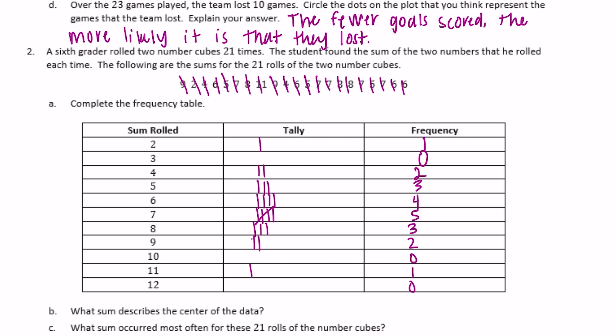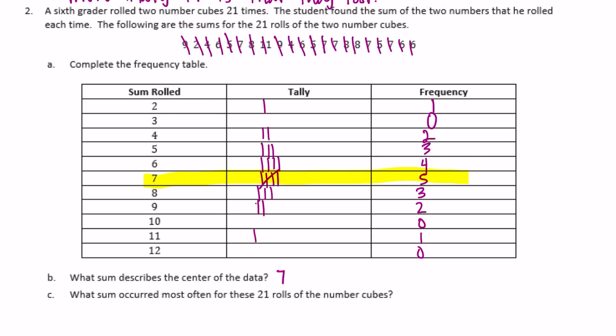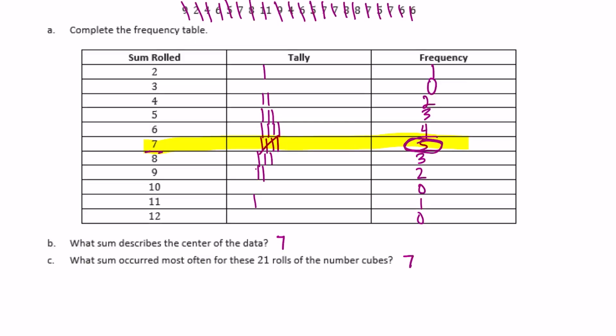Okay. What sum describes the center of the data? So what would be the center of the data? I would say the center is probably around 7. So what sum occurred most often for these 21 rolls of the number cubes? So the one that had the highest frequency or occurred the most often was also 7. It had 5 and the next closest was 4.